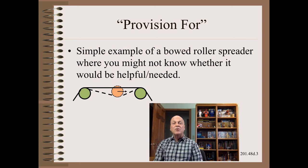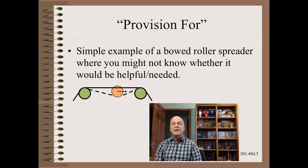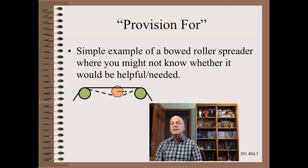Perhaps the simplest and most useful form of modularity is the concept of Provision For. You will almost certainly pay back for the effort by not necessarily needing to buy something you are not sure you need, or may not need at this time. I will give you the simple example of provision for a bowed roller spreader. Let us say that you are not sure that you need a spreader, or perhaps you don't know what spreader is best, or perhaps you might not need a spreader unless you change your materials to something more flexible that could need the spreading help.